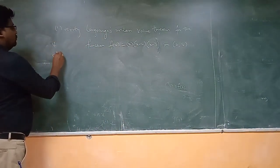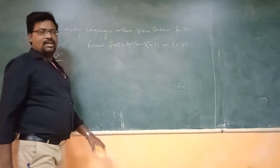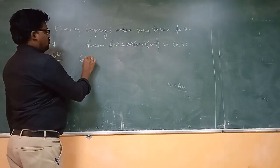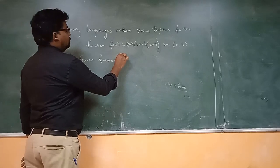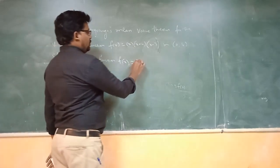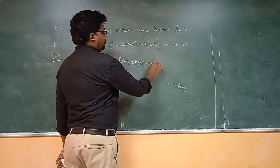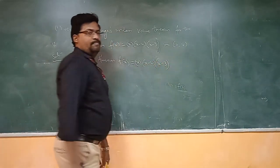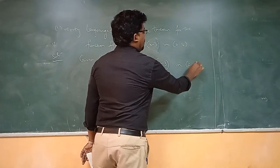So we have to verify whether this function satisfies the conditions or not. Given function f(x) = x(x−2)(x−3) on the open interval [0, 4]. Now we expand this.